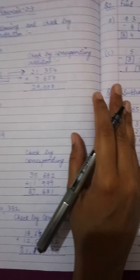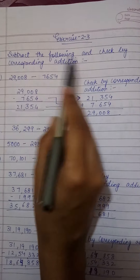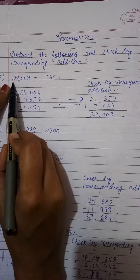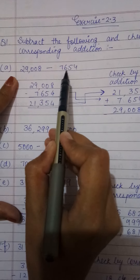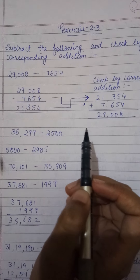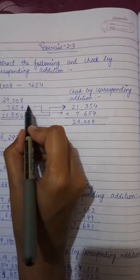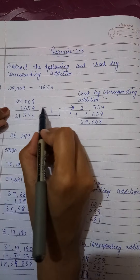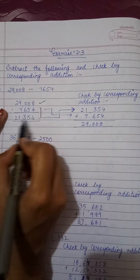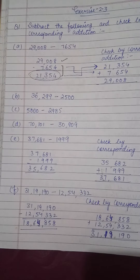Now let's move to Exercise 2.3. In question number 1, you have to subtract and then check by the corresponding addition. For example, 29008 minus 7654: you will subtract and get 21354. To check, simply add these two numbers, and if the bigger number comes as the answer, your answer is correct. Parts B, C, and D you can do by yourself.